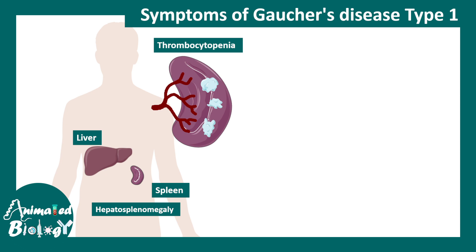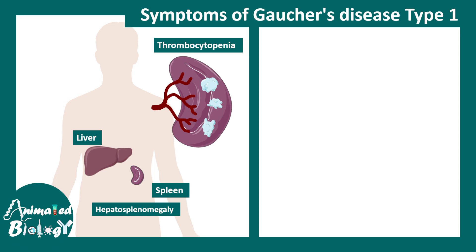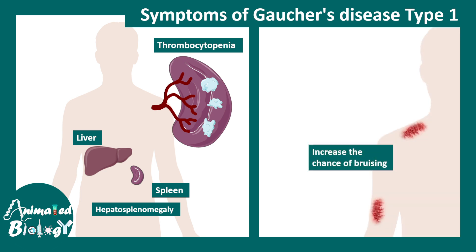The entrapment of thrombocytes leads to thrombocytopenia. Since the thrombocytes are reduced, bruising becomes more frequent and there are greater chances of bruising and bleeding.